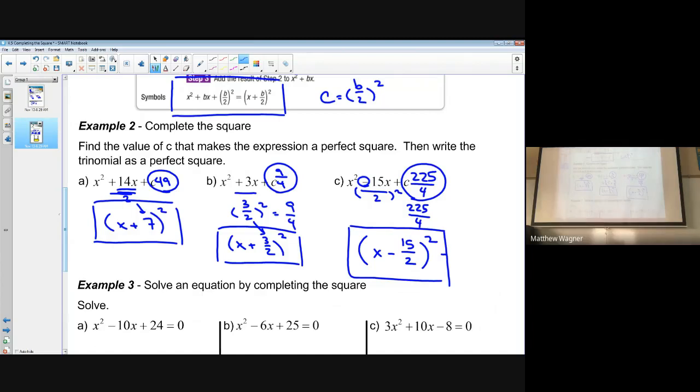If you recall back to factoring, if I wanted to expand back to the beginning, square the first term, which is x squared, square the last term, which is 225 over 4, and then multiply a and b, which is 15 halves, and double it. Negative 30 halves is negative 15. So it does work out. Again, remember, your c value should always be half of b squared.